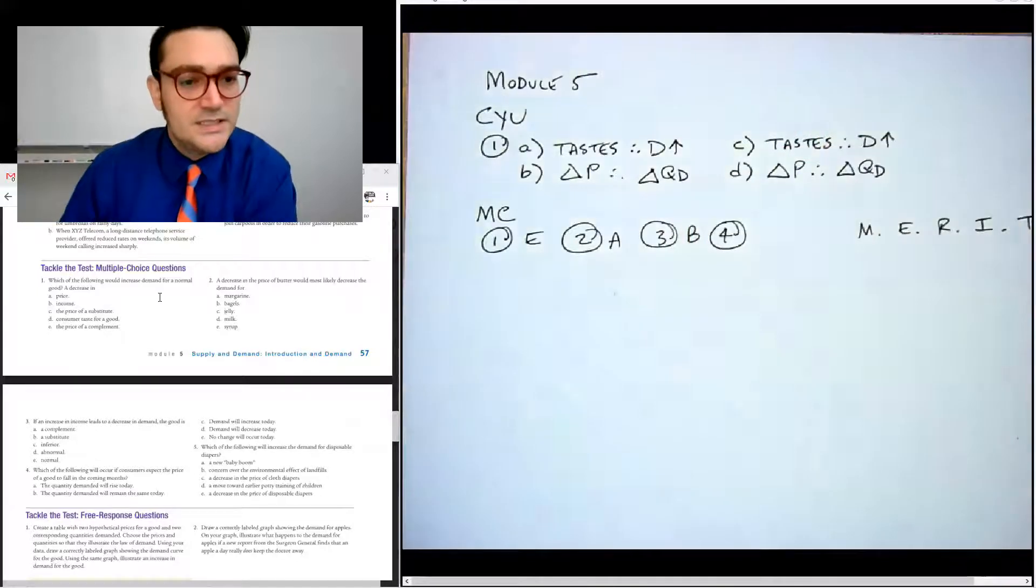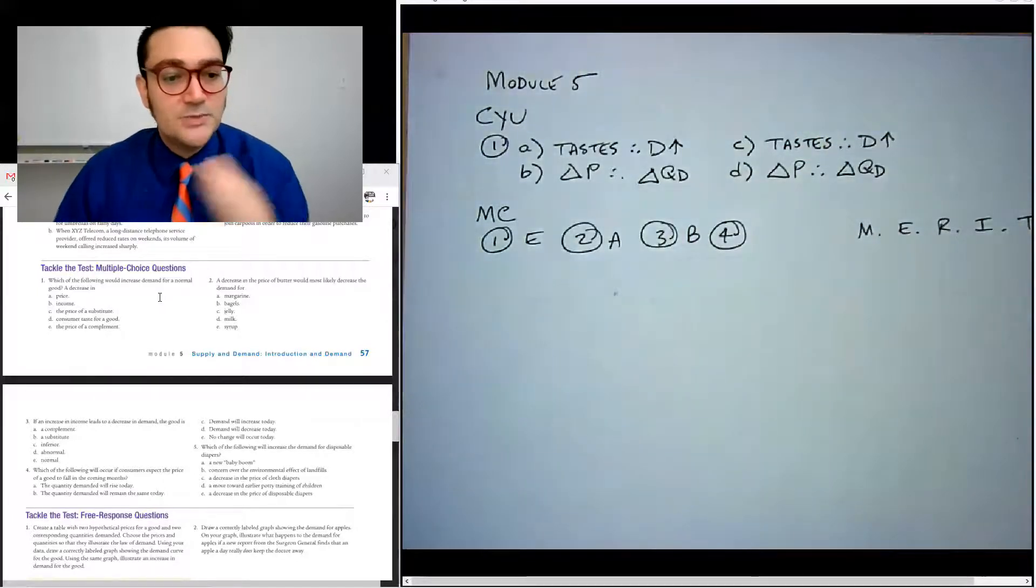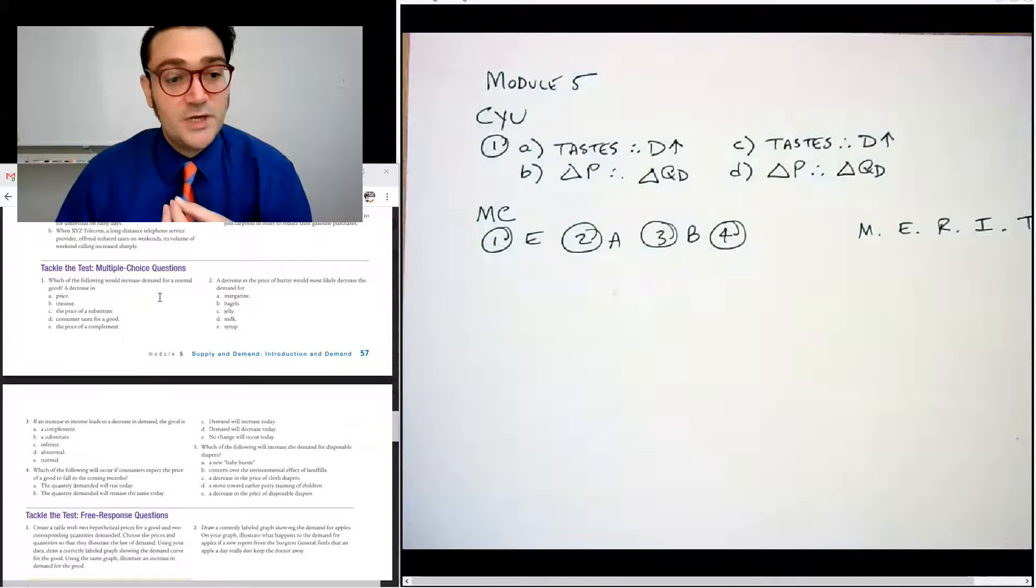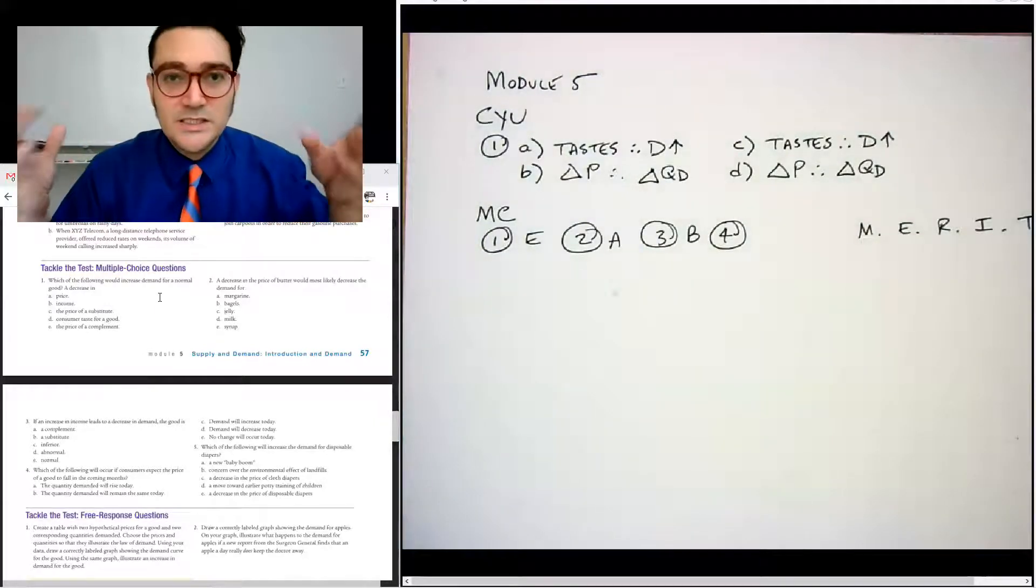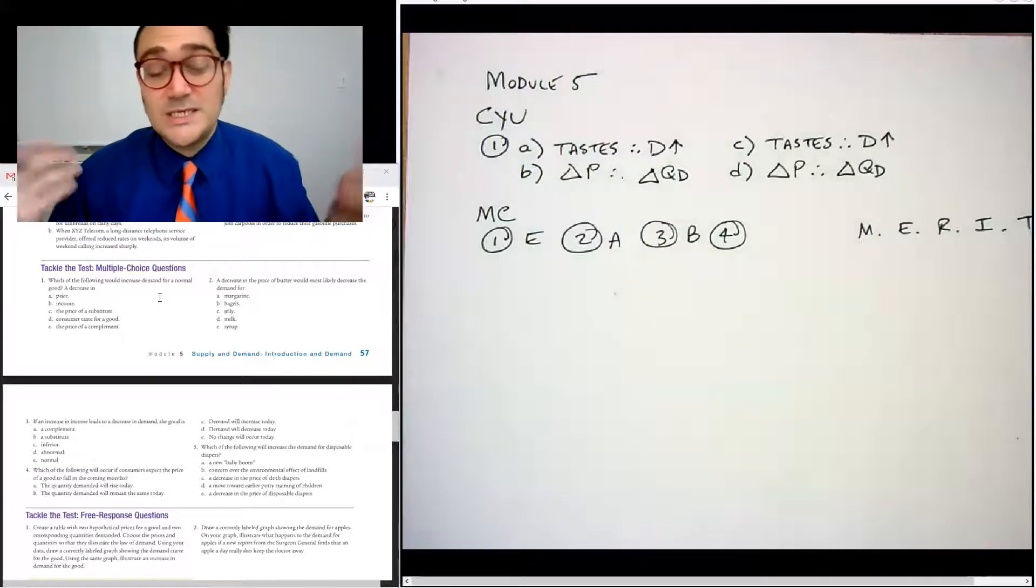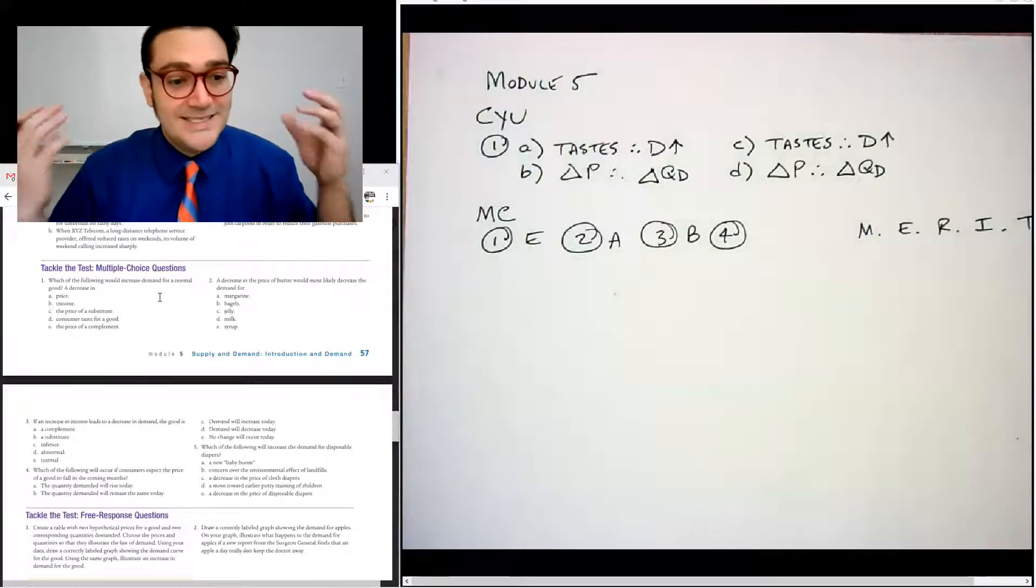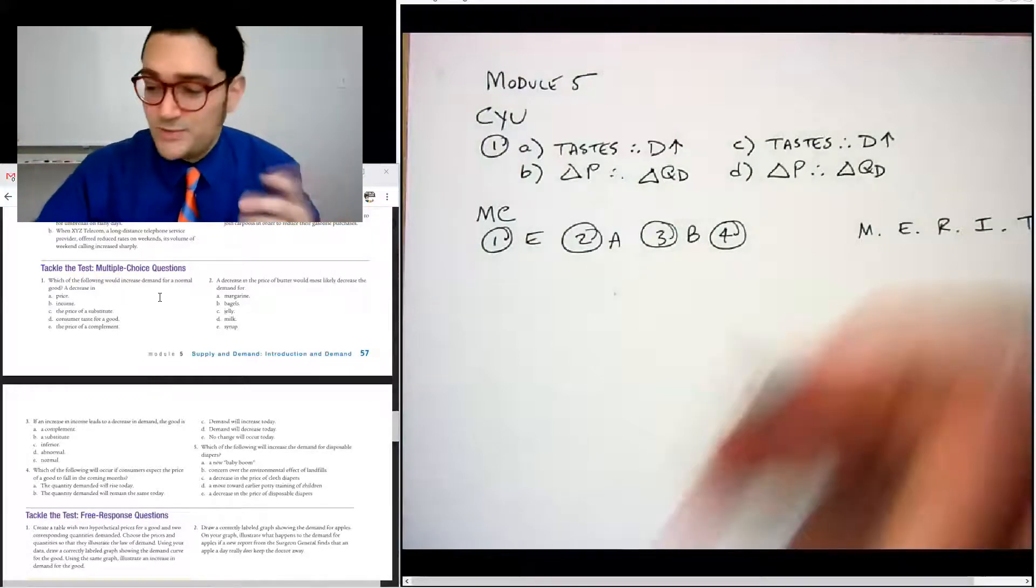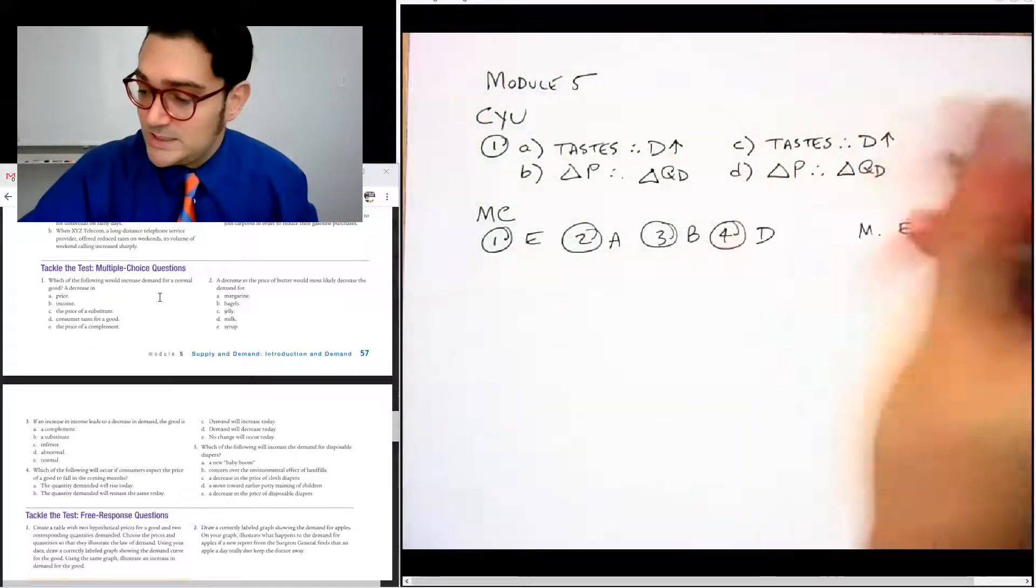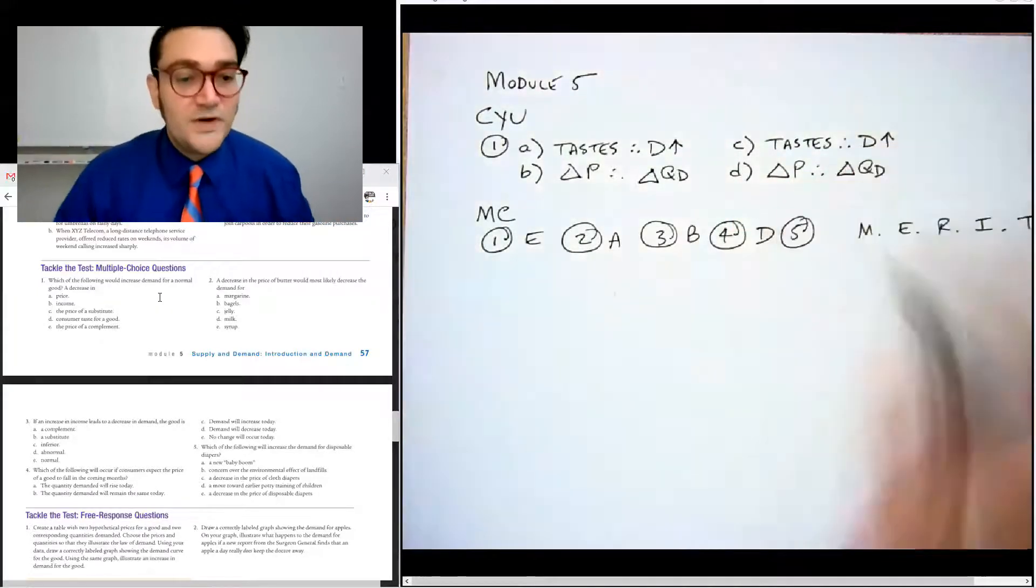Number four is, which of the following will occur if consumers expect the price of a good to fall in the coming months? Well, they're not going to buy very much today. Remember, think about like black Friday sales in the end of November on televisions. People aren't going to buy that many televisions in October if they can help it. So today, right? Which of the following will happen today? Demand will decrease because people will say, I'm going to delay the purchase. So that's D.